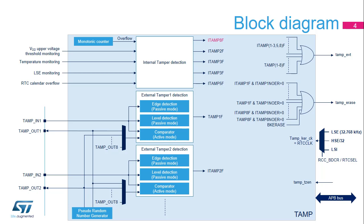The TAMP EVT is used to generate an RTC timestamp event. TAMP erase output is asserted following either tamper event detection, internal or external, or the software erase request done by writing BK erase to 1. The TAMP TZEN input is used to activate the TrustZone in the device.